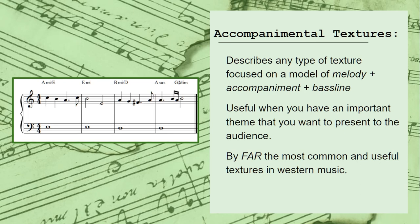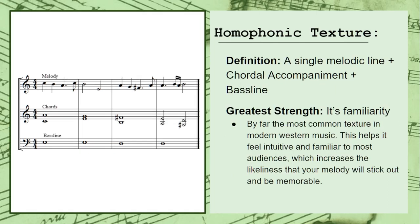Of these textures, the most important and useful one is something called the homophonic texture. The homophonic texture consists of melody plus chordal accompaniment plus baseline, and its greatest strength comes from its familiarity. This is by far the most common texture in modern western music, so it tends to feel intuitive and familiar to most audiences. This helps increase the likelihood that your melody will stick out and be memorable.